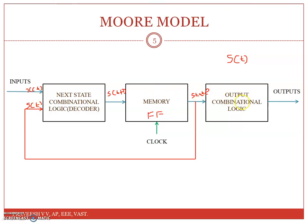In the case of the Moore model, the output is only a function of present state. That is, y(t) is a function of s(t) only.